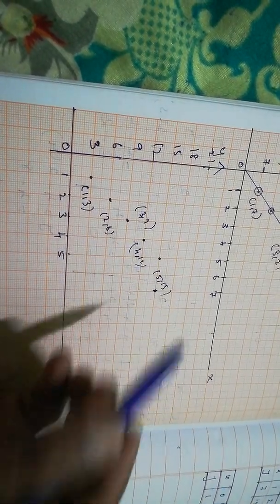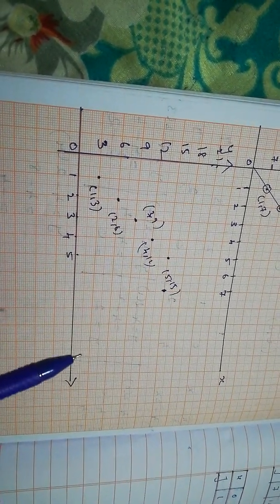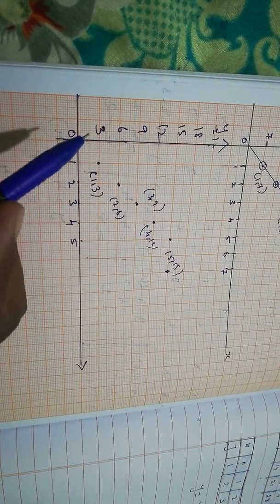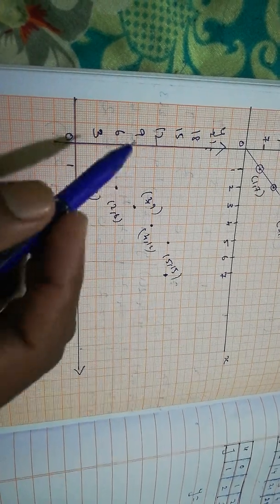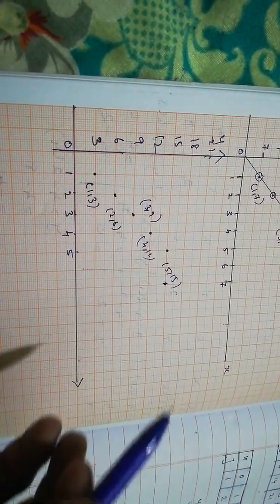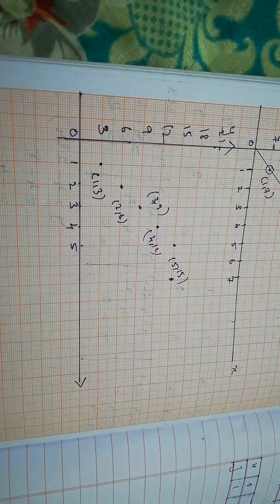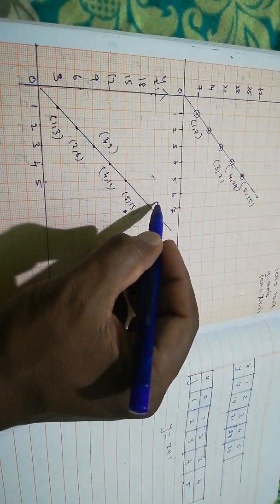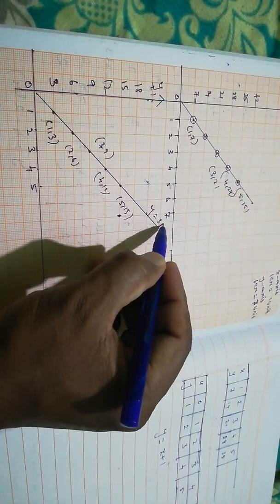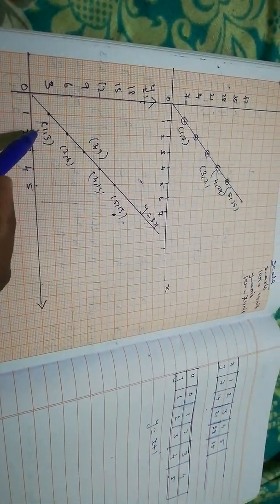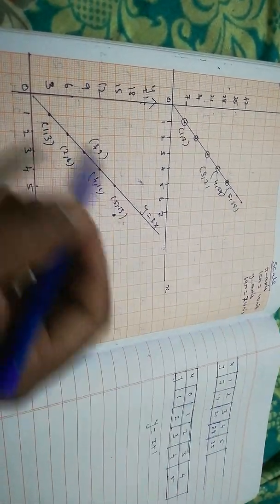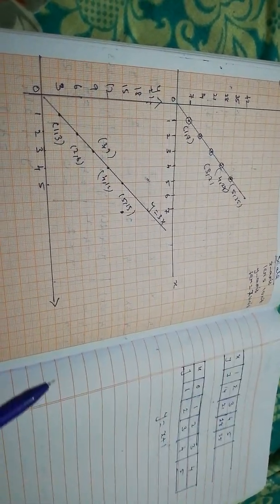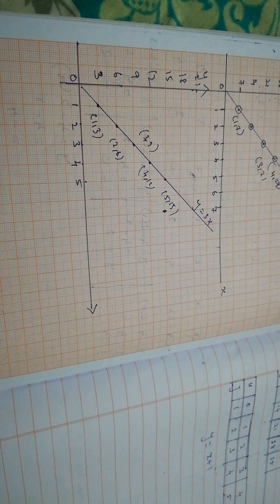Plot the points (1,3), (2,6), (3,9), (4,12), (5,15) and draw a straight line. The relation is y = 3x. Question 4 part 2 is homework — do the same thing for multiples of 5, taking values 5, 10, 15. The relation will be y = 5x.